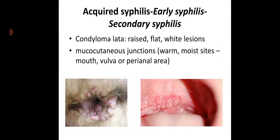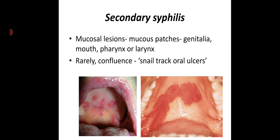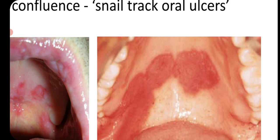Condyloma lata is another lesion seen in secondary syphilis. These are raised flat white lesions seen at mucocutaneous junctions, warm moist sites like the mouth, vulva, or perianal area. Mucosal lesions — mucous patches in the genitalia, mouth, pharynx, or larynx — are also seen in secondary syphilis. They rarely confluence, forming snail track oral ulcers.